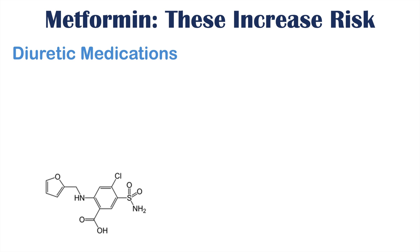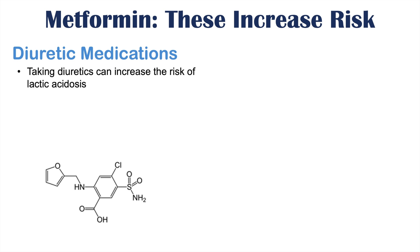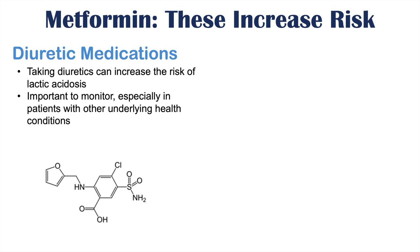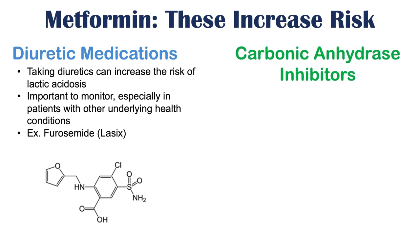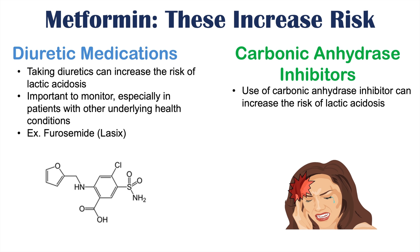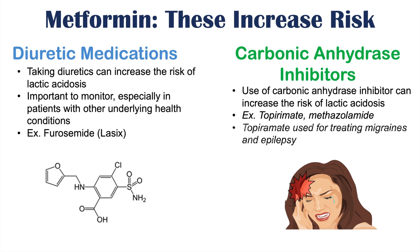Certain diuretic medications can interact with metformin to increase the risk of lactic acidosis, so it's important to monitor patients — especially those with liver disease or heart disease who are also on metformin. One commonly used diuretic is furosemide, also known as Lasix. Carbonic anhydrase inhibitors can also increase the risk of lactic acidosis; these include topiramate, used for migraines and epilepsy, and methazolamide, a treatment for glaucoma.